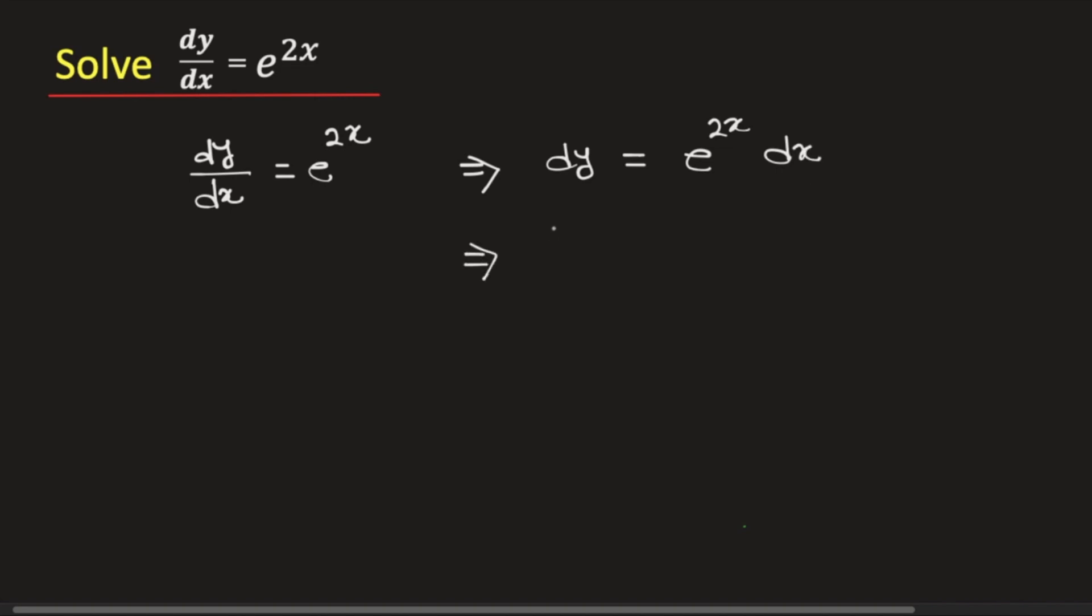Now integrating both sides, we will get integration of dy is equal to integration of e^(2x) dx plus integration constant C.